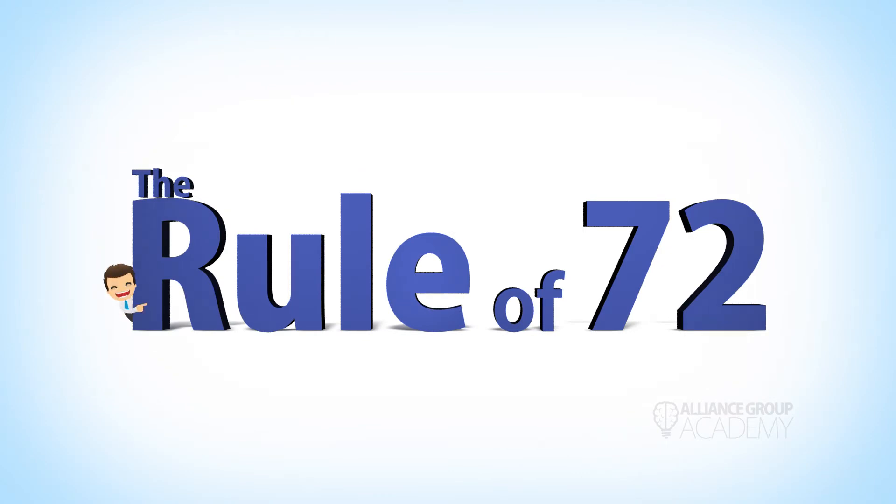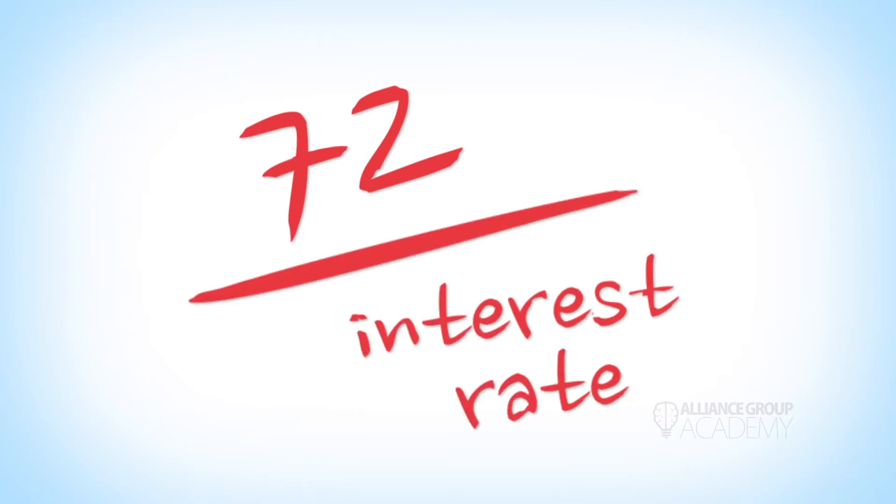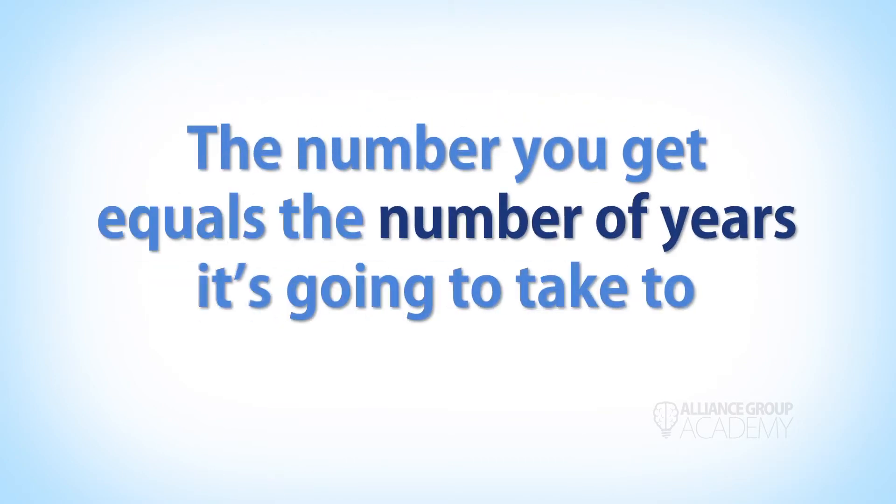It's surprisingly simple. All you do is take the number 72 and divide it by your interest rate. That's it, it's that easy. The number you get equals the number of years it's going to take to double your money.